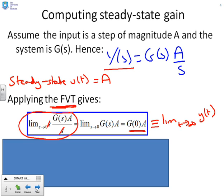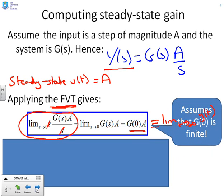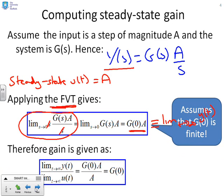We now have both steady state values. Assuming G of zero is finite, the gain is the limiting value as T goes to infinity of Y of T divided by the limiting value of U of T. Substituting gives G of zero times A over A, which is G of zero. So the steady state gain of a transfer function is simply G of zero.